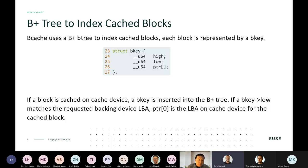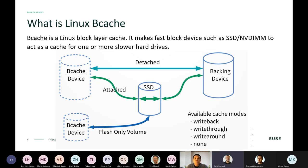What is Bcache? Bcache is a Linux block layer cache. It makes faster block devices such as SSDs act as a cache for one or more slower hard drives.